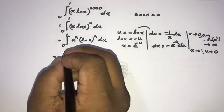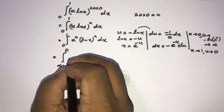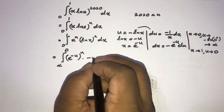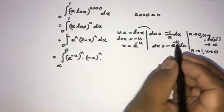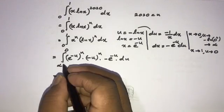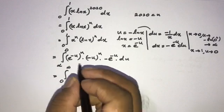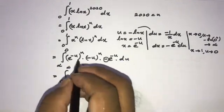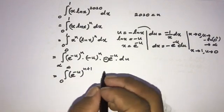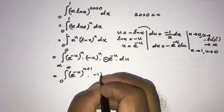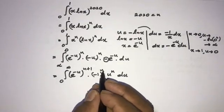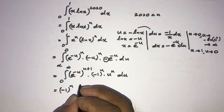The limits become infinity to 0. Here x to the nth power becomes e to the minus u to the nth power. Natural log of x equals minus u, so we get minus u to the nth power. And dx equals negative e to the minus u du. Swapping limits from 0 to infinity, the minus cancels. We get e to the minus u to the n+1 power times minus 1 to the nth power times u to the nth power du. We can take minus 1 to the nth power outside the integral.